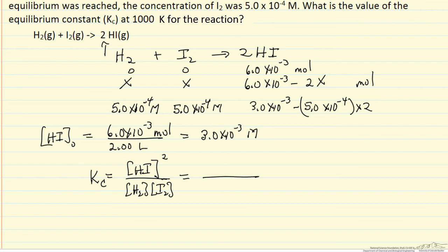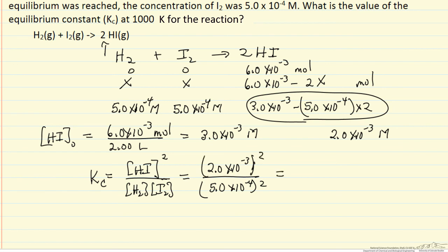These numbers are 5.0 × 10⁻⁴ for each of these, so that's squared. We just have to calculate this number. I'll substitute 2.0 × 10⁻³ molar, square that, and I'll get the equilibrium constant. So the equilibrium constant at this temperature is 16.